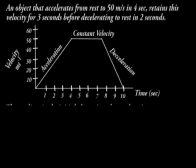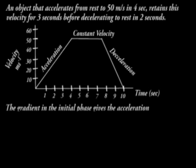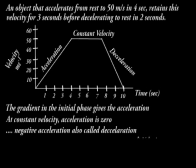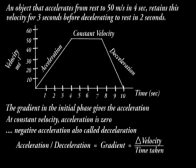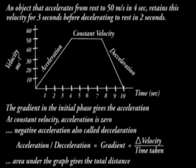The gradient of the graph in the initial phase gives the acceleration. At constant velocity, acceleration is 0. When velocity reduces with time, it's negative acceleration, also called deceleration. Acceleration or deceleration is equal to gradient and is equal to change in velocity over time taken.